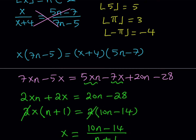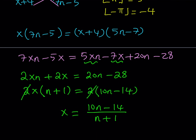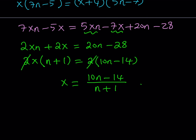Let me recap the process. We defined the floor value as the greatest integer less than or equal to x, went through examples, and set it equal to n, which is an integer. The general strategy for solving floor value equations is to set the floor value equal to an integer and work from there. We've now found x in terms of n.